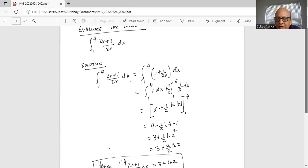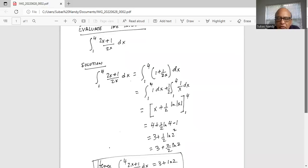Do not write ln x, it's absolute value of ln x, hence you see those two vertical bars. The limits of integration are between 1 and 4.